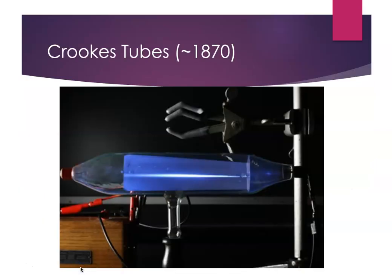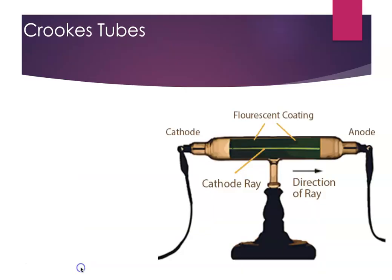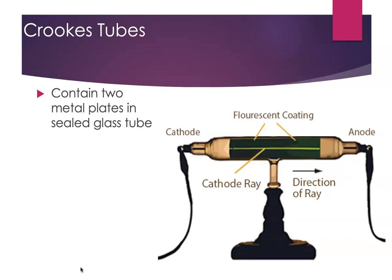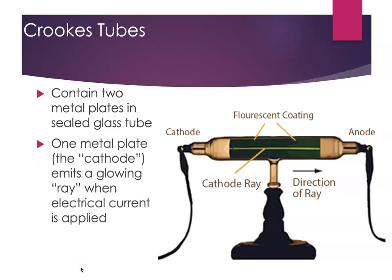The story starts around 1870 when devices known as Crookes tubes became very popular. What we have are two metal plates in a sealed glass tube — it's pretty much a vacuum inside — and if you apply an electric current, the metal plate called the cathode will emit a glowing ray that travels to the other plate called the anode. A fluorescent coating behind the tube makes it possible to see the ray.